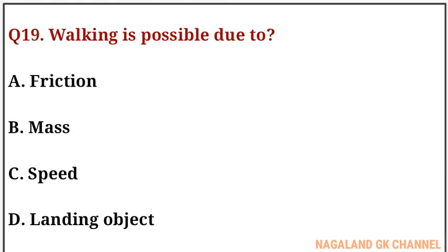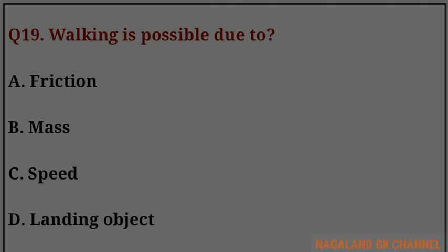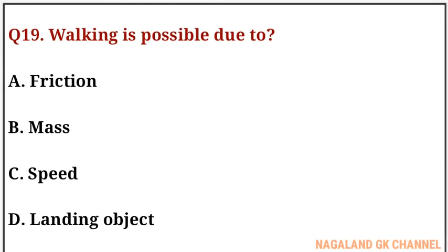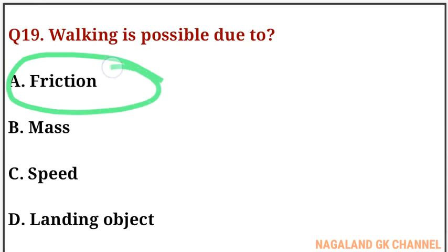Question number nineteen: walking is possible due to what? The correct answer is option number A, that is friction.